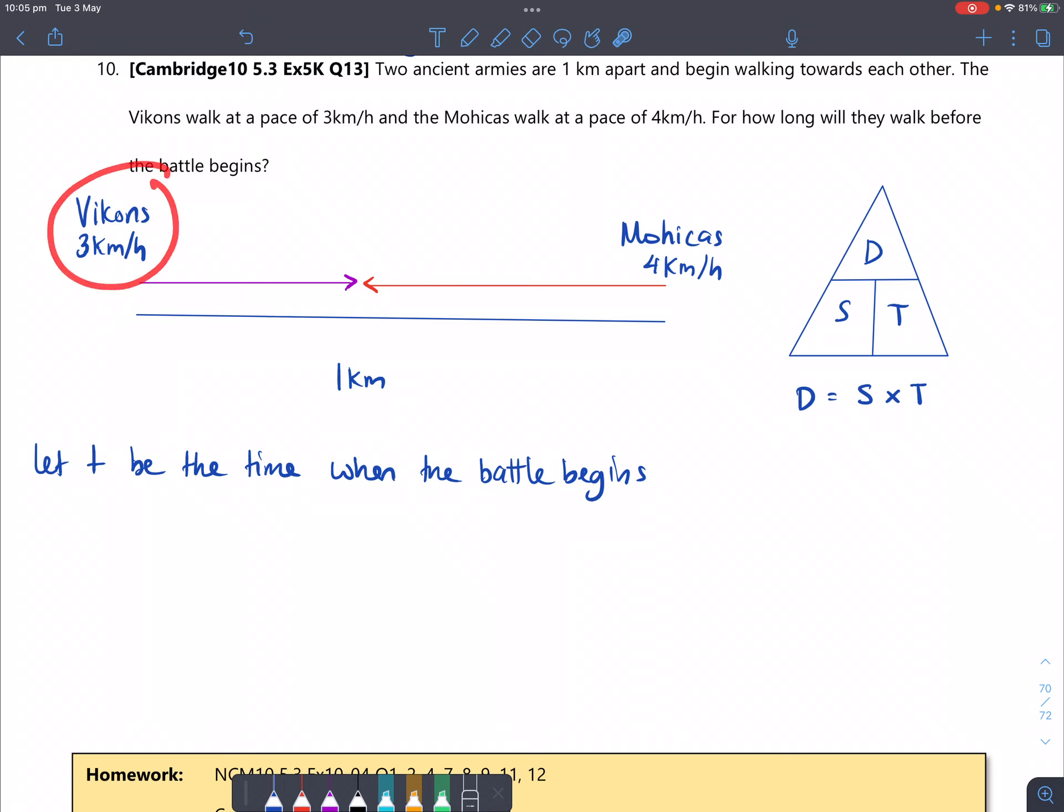So the Vikons are here, they're walking this way, Mohicas are here walking that way. So Mohicas walk faster by just one kilometer per hour. But all together, they are one kilometer spaced out apart.